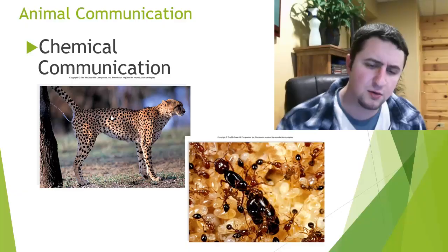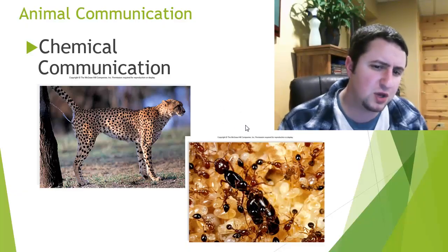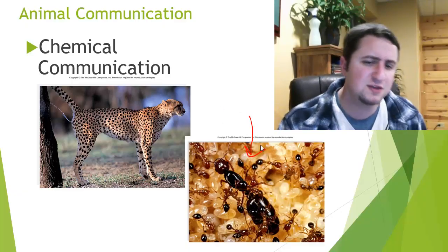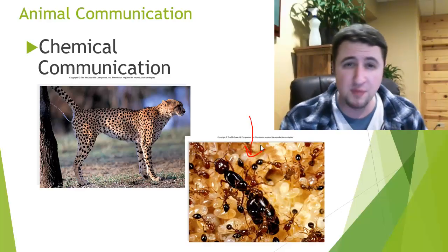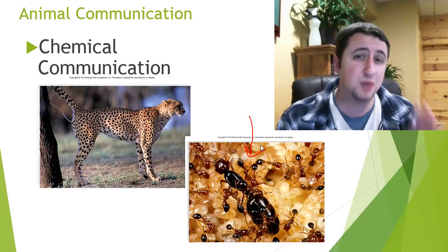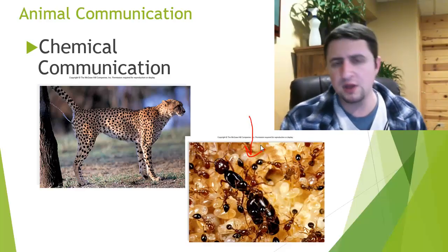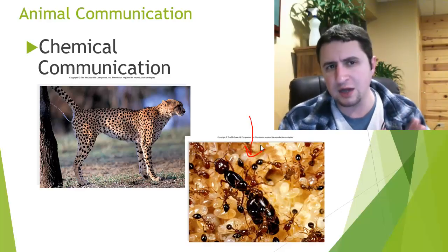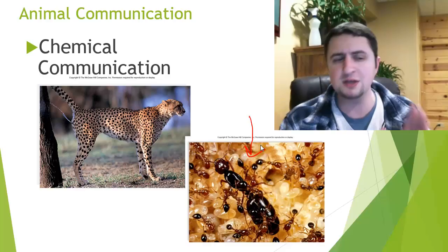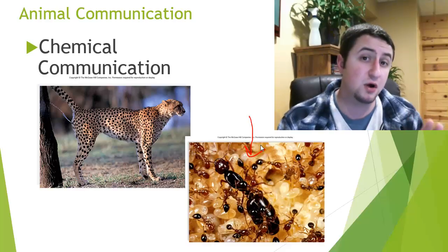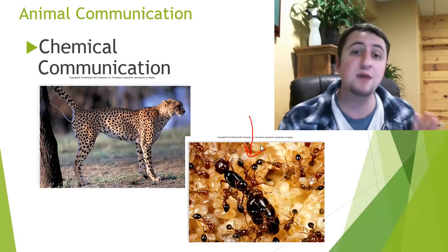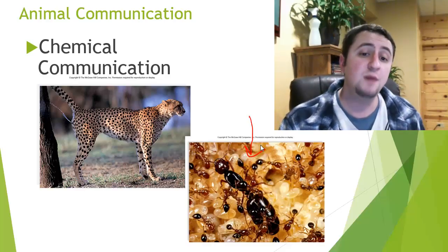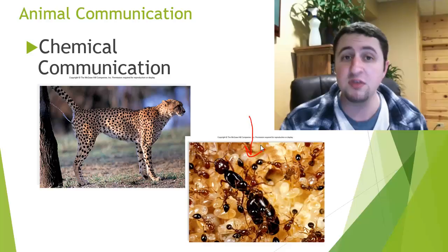Another really good example of chemical communication is with insects. Insects, especially ants, are almost entirely blind. The only way that they actually communicate is through pheromones and sending out different chemicals that convey different things.